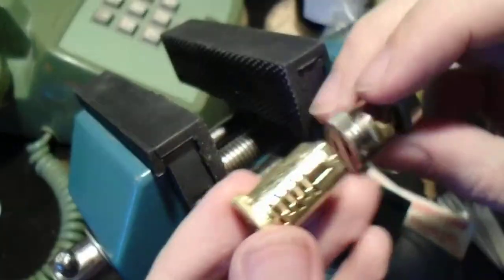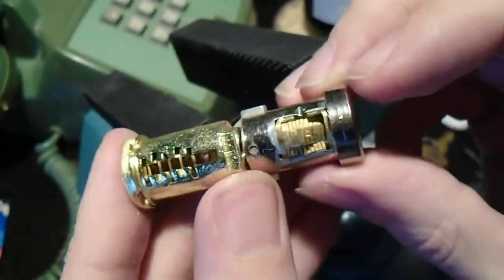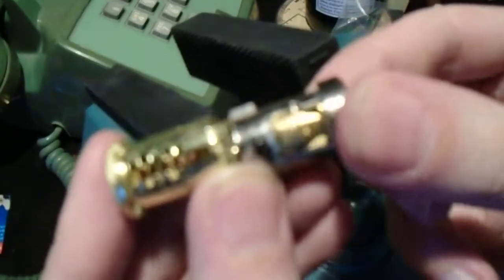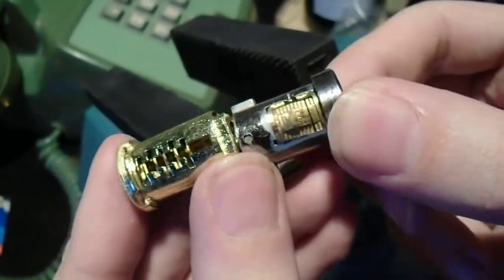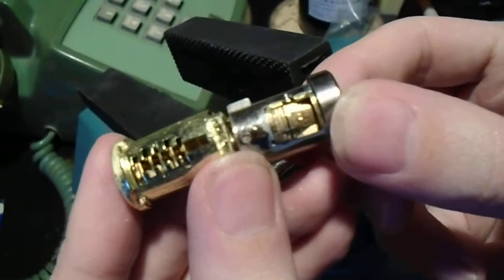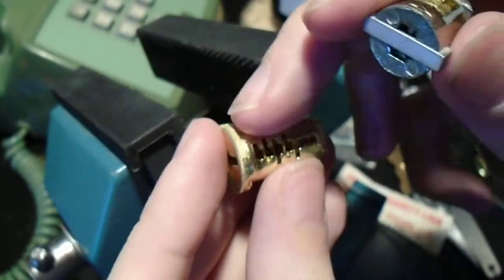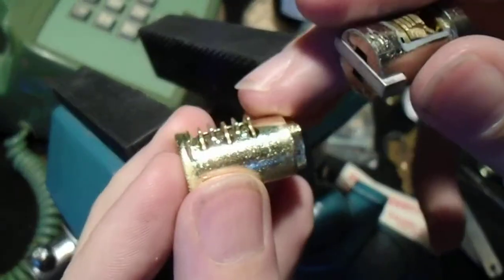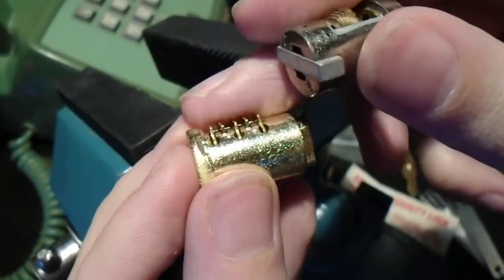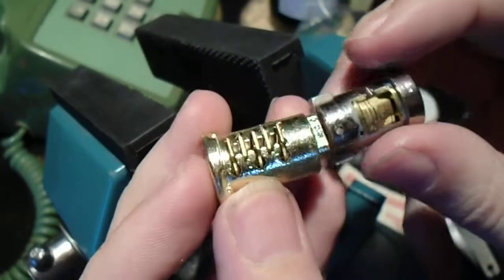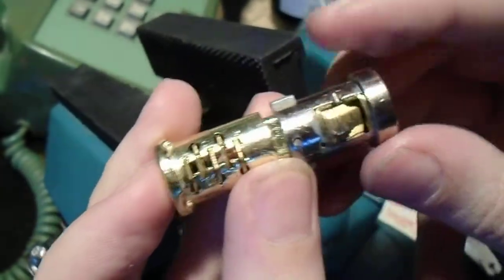Now notice, compare these wafer stacks to each other. This one is super dense. It's just one right next to the other, all sort of grinding together. Whereas this one, it's just five wafers tucked into individual slots, and they're pretty widely spaced.